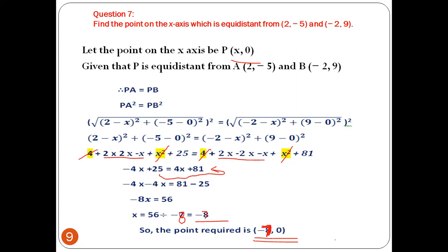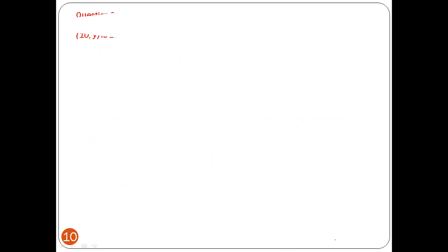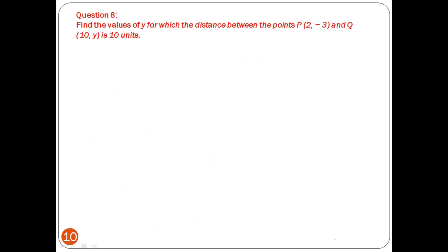Question 8: Find the values of y for which the distance between points P(2, -3) and Q(10, y) is 10 units. The approach is simple — use the distance formula, find the distance between P and Q, and equate it to 10.